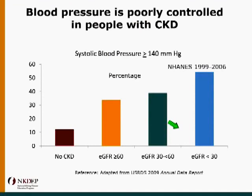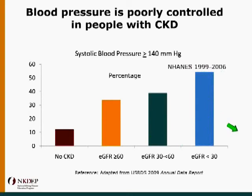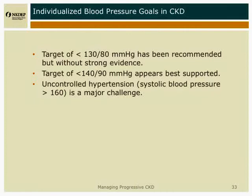The first issue we want to address is blood pressure. In general, blood pressure is not well treated in people with kidney disease. The worse the kidney function, the higher the blood pressure. Actually, the Indian Health Service does a better job than most settings, with close to 75% of people with blood pressures less than 140 over 90.